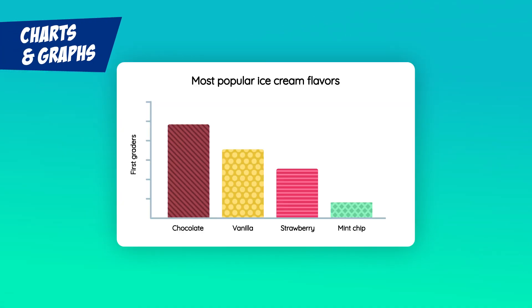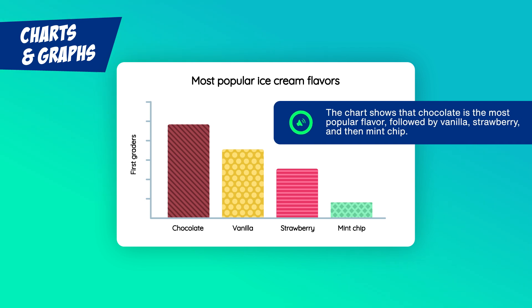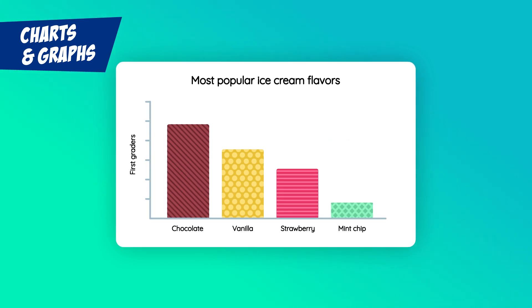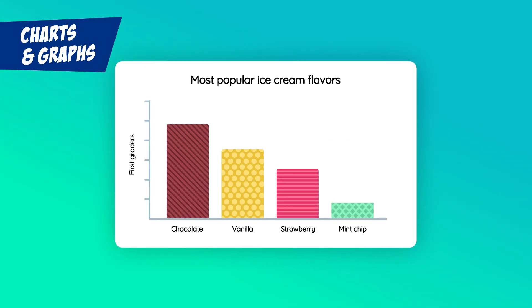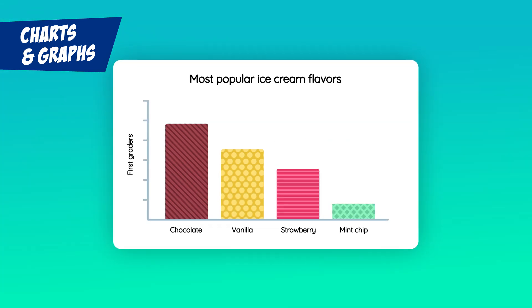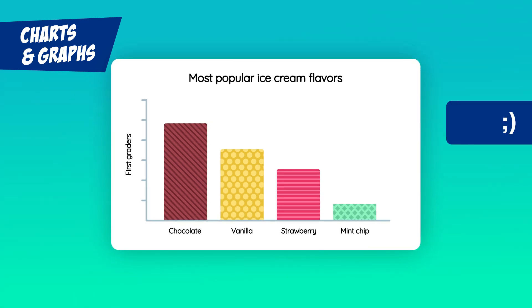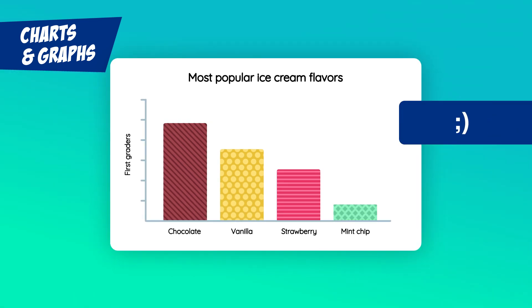Charts and graphs. Here's a chart showing first graders' favorite ice cream flavors. It should have a text alternative, like: the chart shows that chocolate is the most popular flavor, followed by vanilla, strawberry, and then mint chip. This helps someone who can't see the chart understand the information it's sharing, and it proves that mint chip is bad ice cream. Feel free to disagree in the comments.